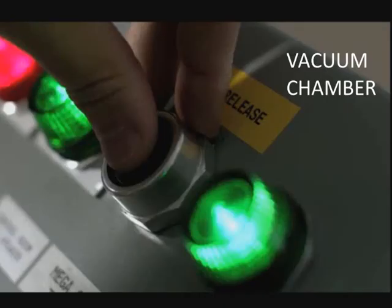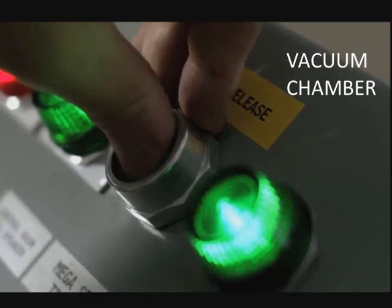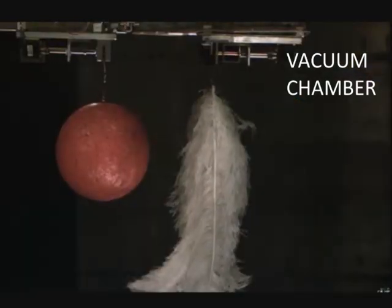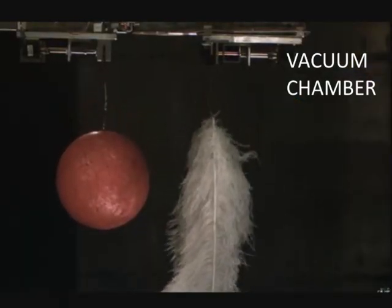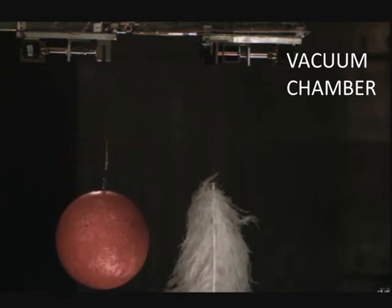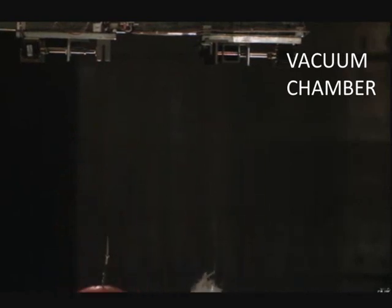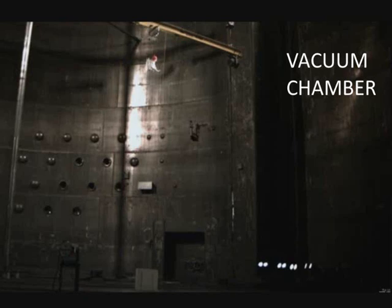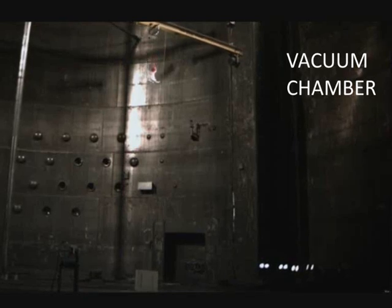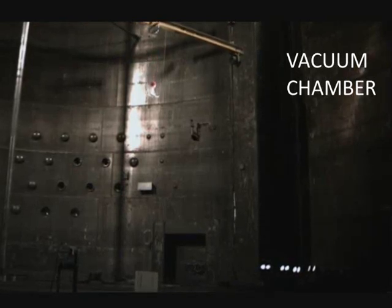And now take a look on the previous experiment with the feathers and the bowling ball. We change conditions and we let them fall, in this case, in the vacuum chamber. This is the slow motion recording again. As you can see, they both fall down at the same time. They have the same speed.